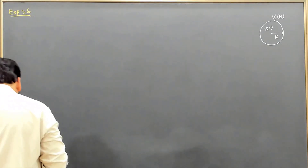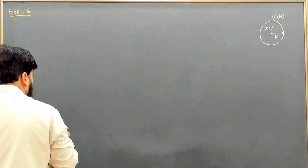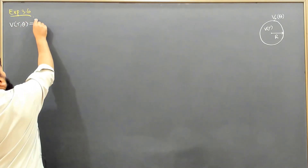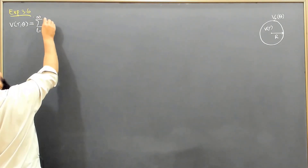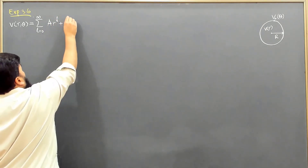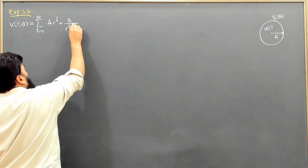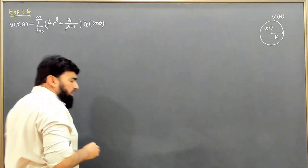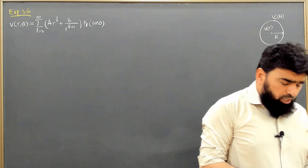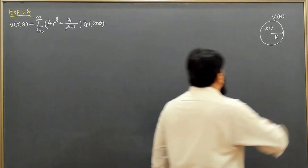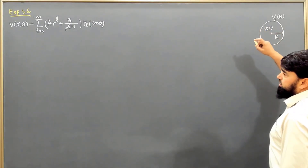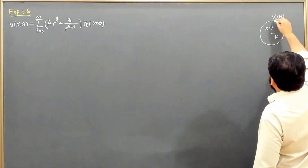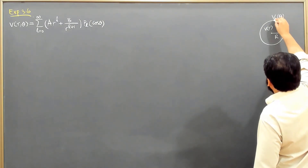Our general solution is V(r,θ) equal to the summation over L running from 0 to infinity of A_L·r^L plus B_L·r^(−L−1), multiplied by P_L(cosθ). This is our equation and we need to determine the constants A_L and B_L. V₀(θ) is specified on the surface.